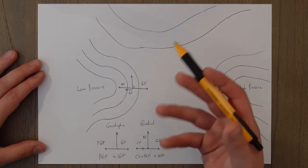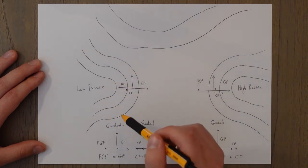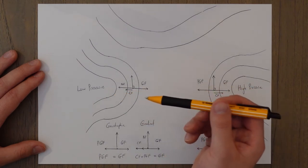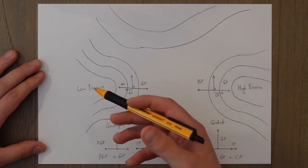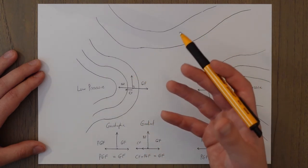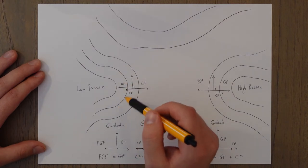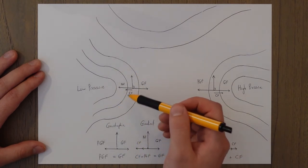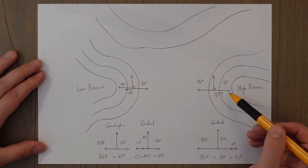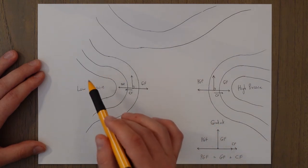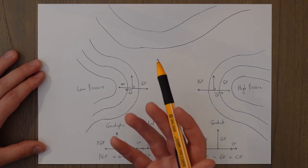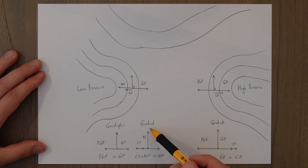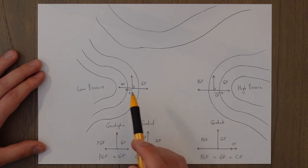In reality the isobars are very rarely straight lines and are often curved, which means we introduce a centripetal force acting into the turns and curves of the isobars. The pressure gradient force and the geostrophic force are always equal and opposite, and depending on the direction of the curve the centripetal force acts either with the pressure gradient force or with the geostrophic force. For a low pressure area the pressure gradient force and the centripetal force act together against the geostrophic force, and the result is that the gradient wind speed is slower than the equivalent geostrophic wind speed.